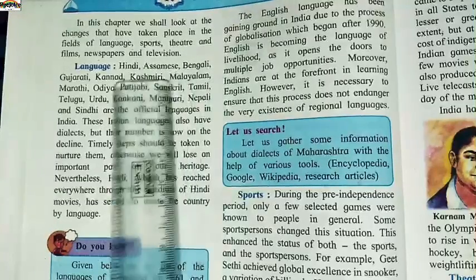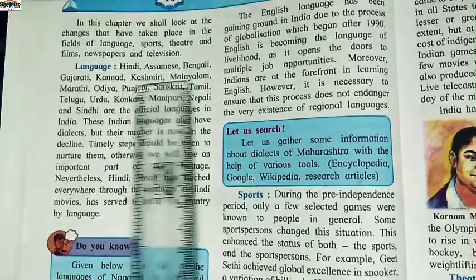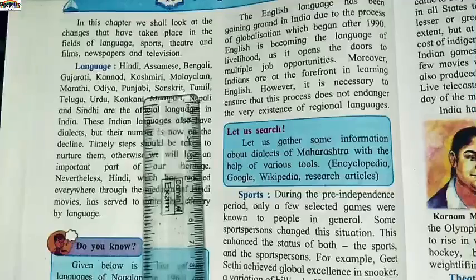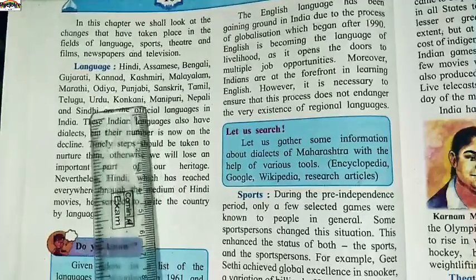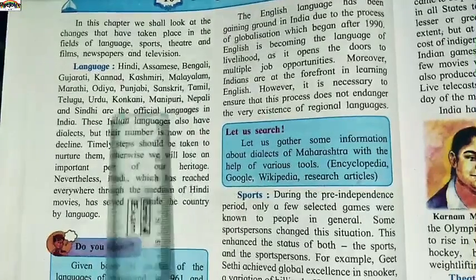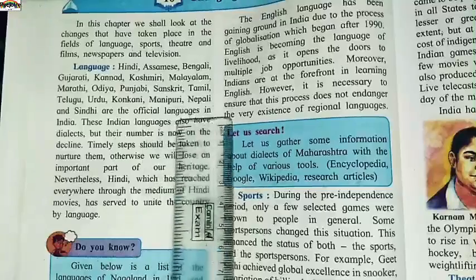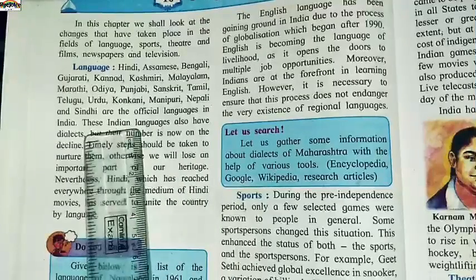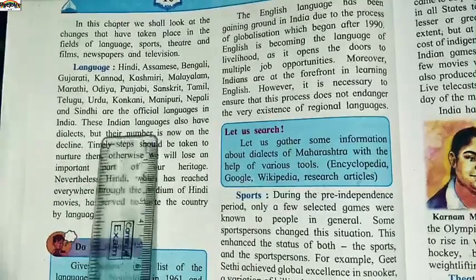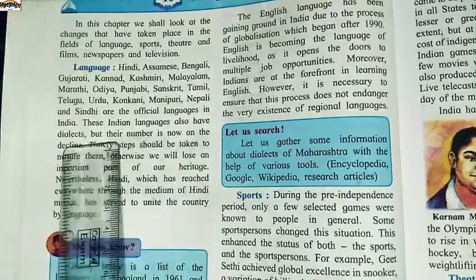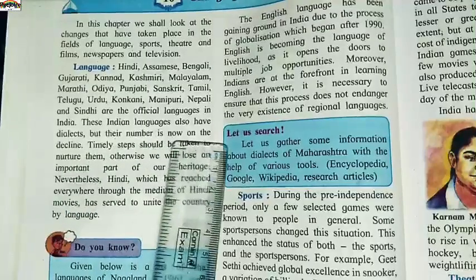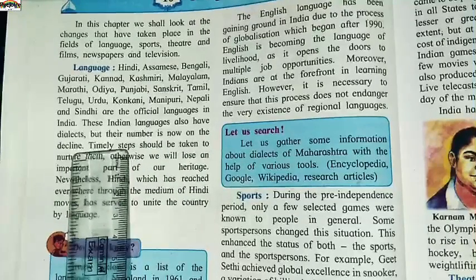The official languages of India are: Hindi, Assamese, Bengali, Gujarati, Kannada, Kashmiri, Malayalam, Marathi, Oriya, Punjabi, Sanskrit, Tamil, Telugu, Urdu, Konkani, Manipuri, Nepali, and Sindhi. These Indian languages also have dialects, but their number is now under decline.